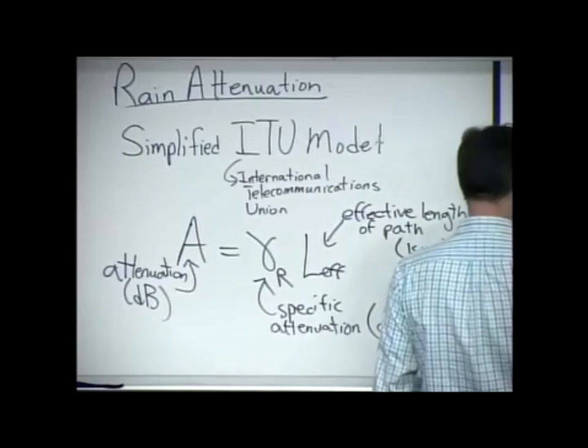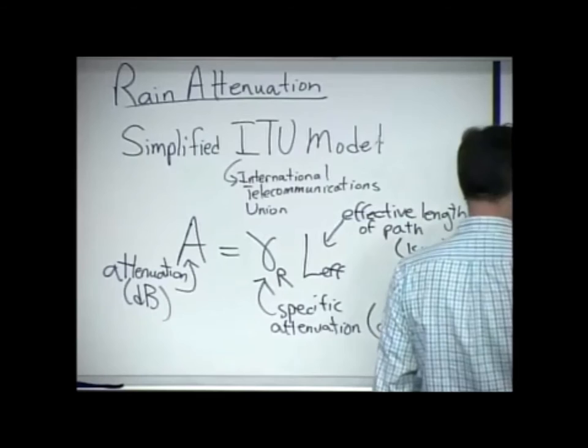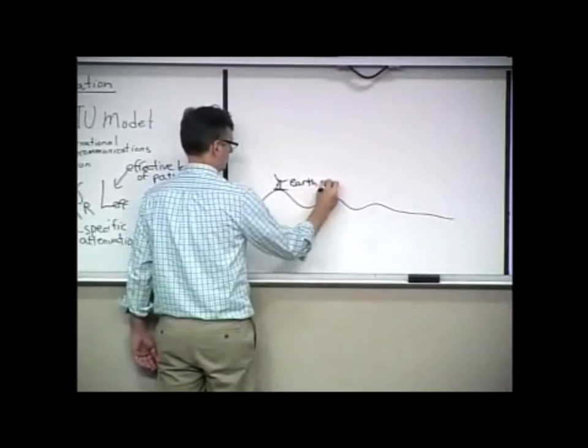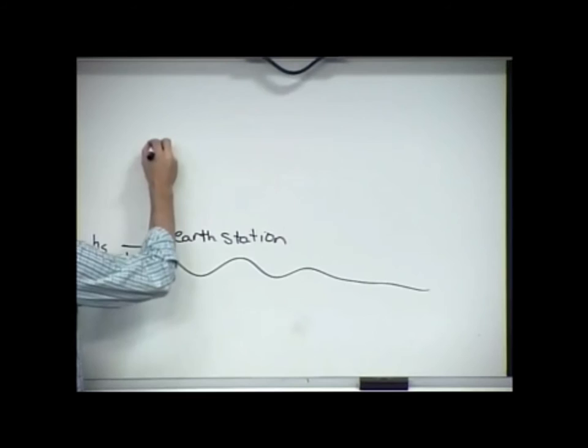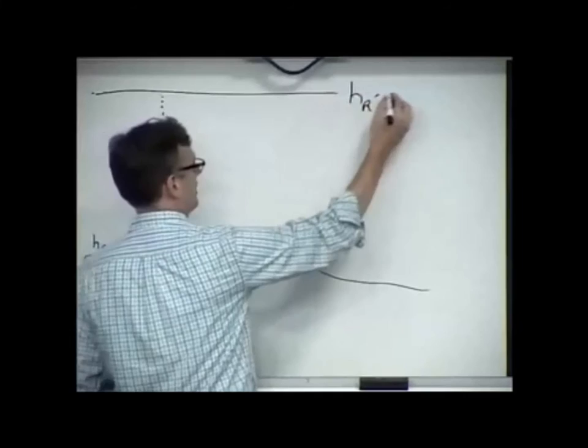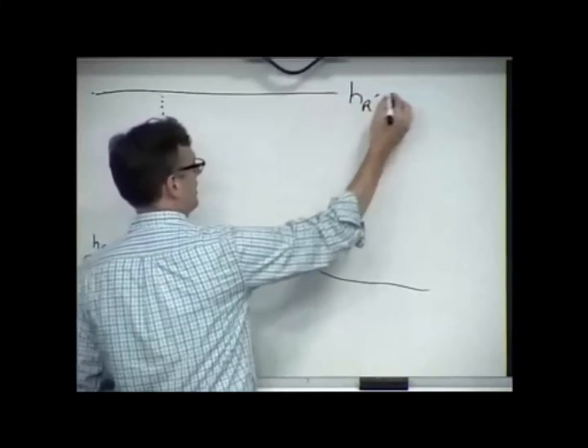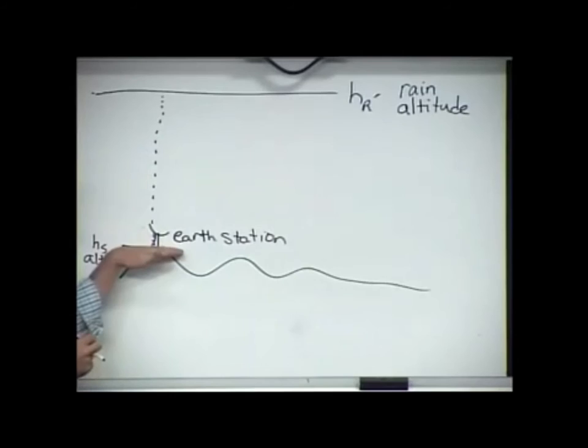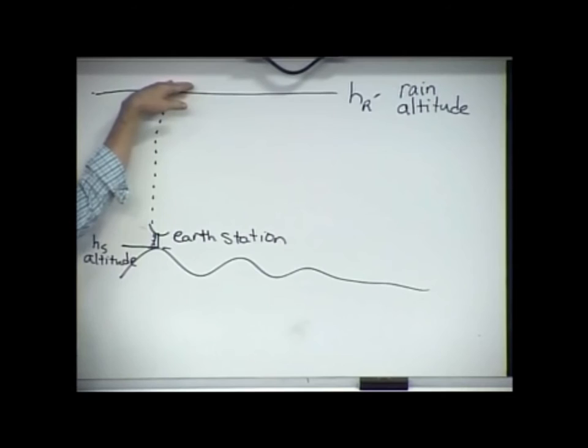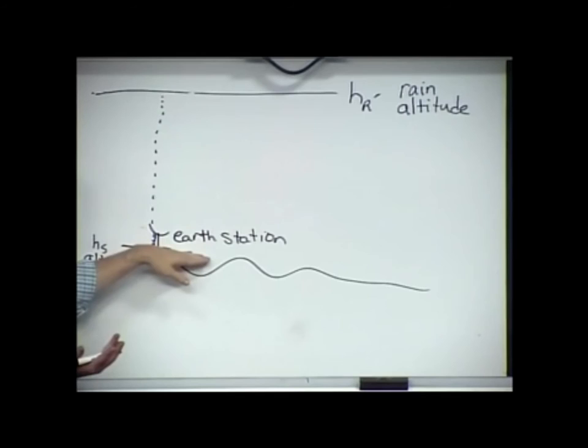If you have an altitude, let's say you have an earth station. And to be consistent with your textbook, let's go ahead and use an H sub S for station. And at some altitude, you have an H sub r prime. This is your rain altitude. And so essentially, you're at this altitude. Your rain has to start at some altitude. Typically, it's a kilometer or so.